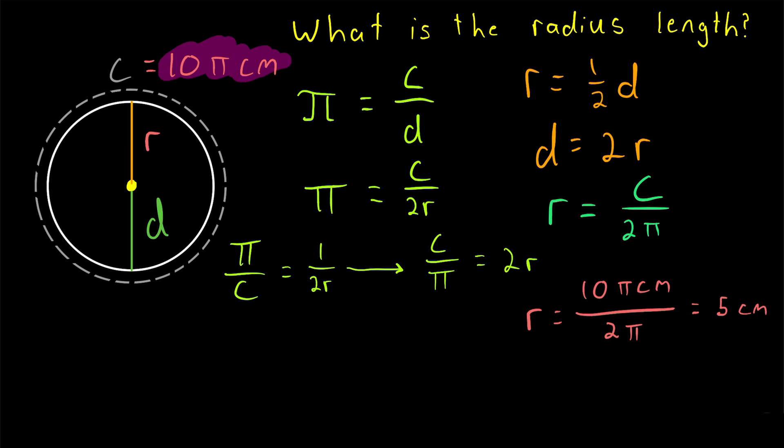So again, if you're given the circumference of a circle, then to find the radius, just divide that circumference by 2 pi. And remember, you might not always be given a circumference in terms of pi. So when you go to find the radius, you might not get a nice whole number and you might have to round.